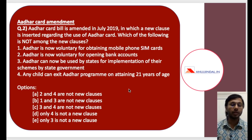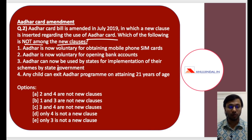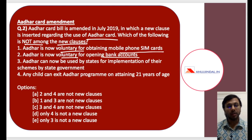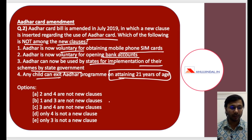The second question is related to the Aadhar card amendment. The Aadhar card bill was amended in July 2019, in which new clauses were inserted regarding the use of Aadhar card. The clauses are: 1) Aadhar is now voluntary for obtaining mobile phone SIM cards. 2) Aadhar card is now voluntary for opening bank accounts. 3) Aadhar can now be used by states for implementation of their schemes. 4) Any child can exit the Aadhar program on obtaining 21 years of age.